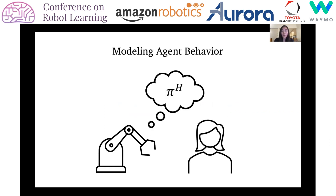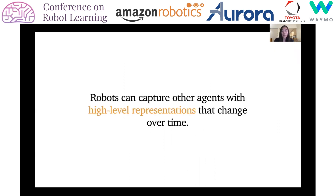Prior work for handling multi-agent interactions would explicitly model every low-level aspect of other agents' policy, but people can interact with one another with little to no effort. They do so by maintaining a high-level representation of other agents. We recognize that robots can also capture other agents with these high-level representations that change over time, which we call their latent strategy.